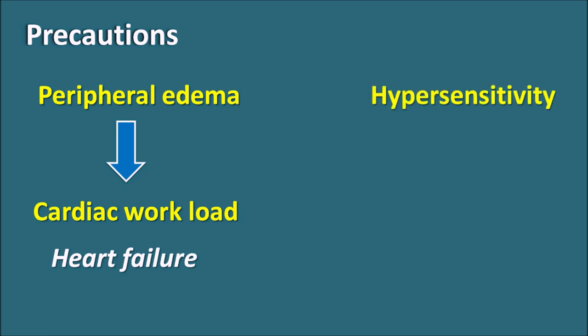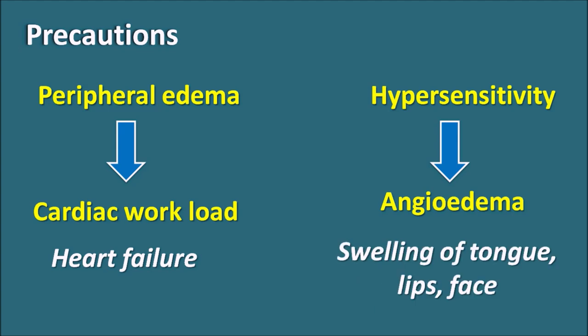Another precaution is hypersensitivity. As already discussed, pregabalin can produce skin reactions and allergic reactions. When this drug produces hypersensitivity reactions, it can result in angioedema. In some patients, we can observe swelling of the tongue, lips, face, and neck — all due to hypersensitivity reactions.